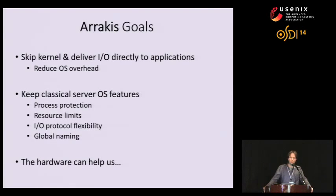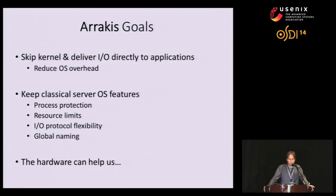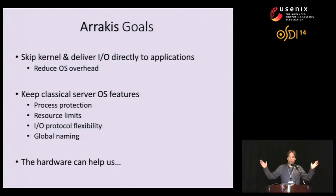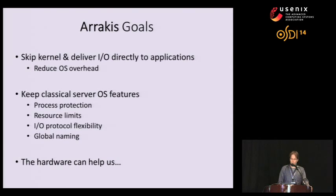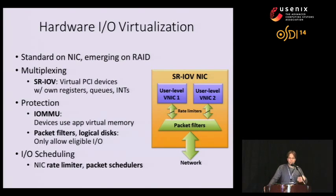In Arrakis, the goal must be to somehow skip the operating system kernel and deliver I/O directly to applications — network packets, disk blocks, and so forth — to reduce OS overhead. At the same time, we'd like to keep all the features we've grown accustomed to: protection among multiple processes, enforcement of resource limits, flexibility to roll out custom I/O protocols, and a global naming system like a global file system. It turns out current data center hardware can help quite a bit, through hardware I/O virtualization, already standard on data center NICs and an emerging technology for RAID controllers.